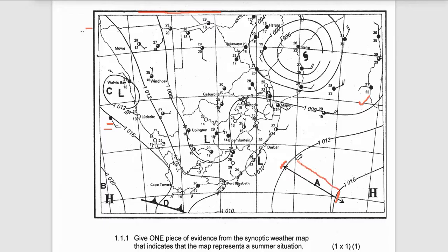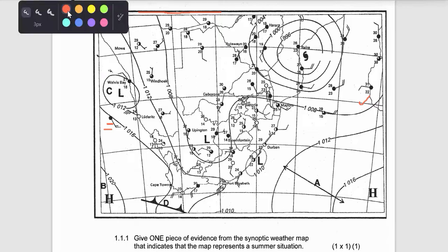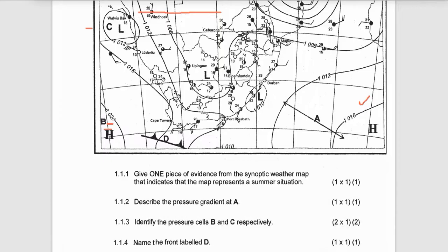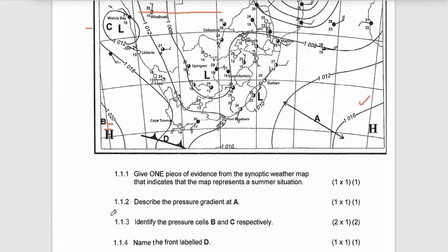The pressure gradient is gentle — very low pressure. That's why it is gentle, which represents low pressure.